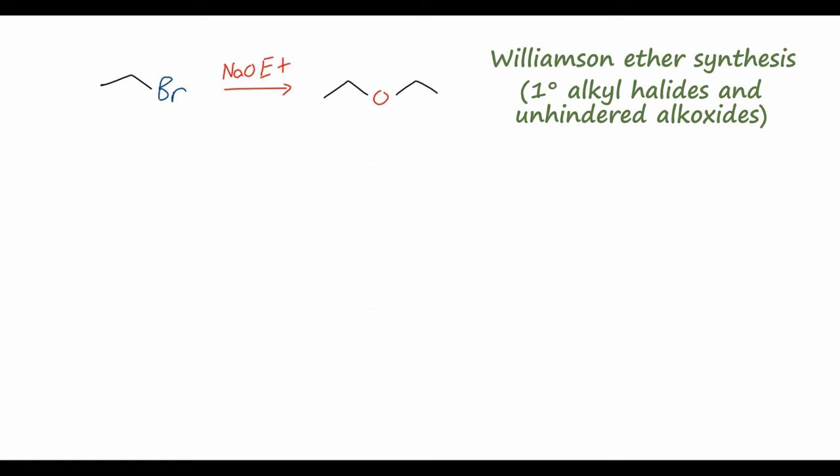If we have a secondary or tertiary alkyl halide, or a very sterically hindered base, the reaction will likely undergo an E2 reaction giving us the alkene instead of the ether. If you're confused on why that happens, please take a look at my video discussing how to differentiate between SN2 and E2 reactions.